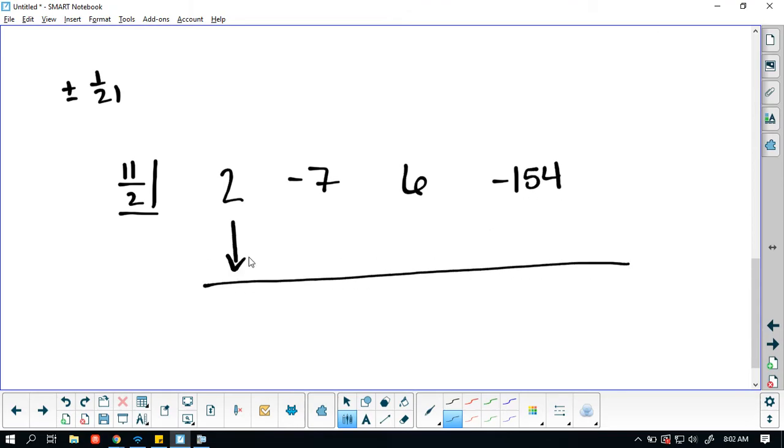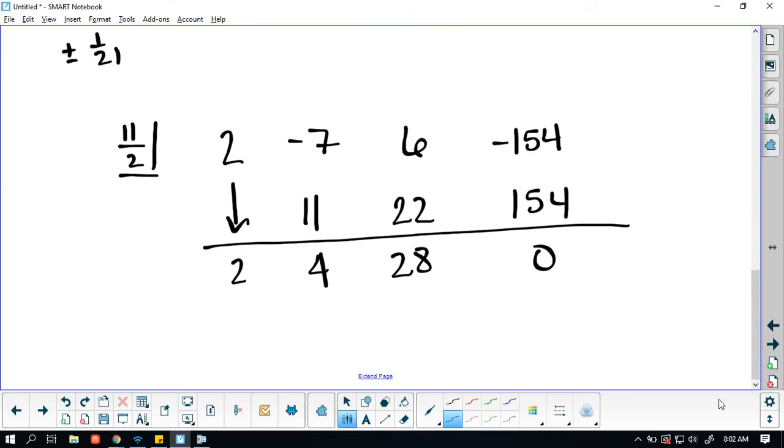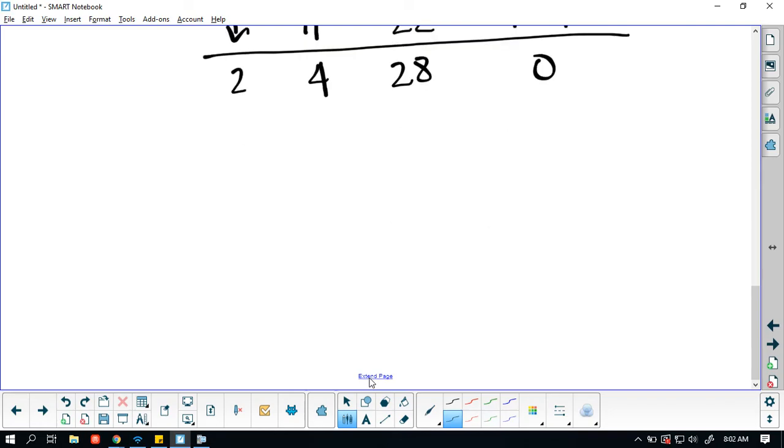Getting my coefficients, this is 2, negative 7. So I'm using synthetic to reduce my equation into a factored form. Alright, 2 comes down. We're going to look at 11 here. Negative 7 plus 11 is going to be 4. 4 times 11 divided by 2 is going to be 22. 6 plus 22 is 28. 28 divided by 2 times 11 is going to be 154. And this should be 154 because we should get a remainder of 0 because this is a solution, which can then be turned into a factor.